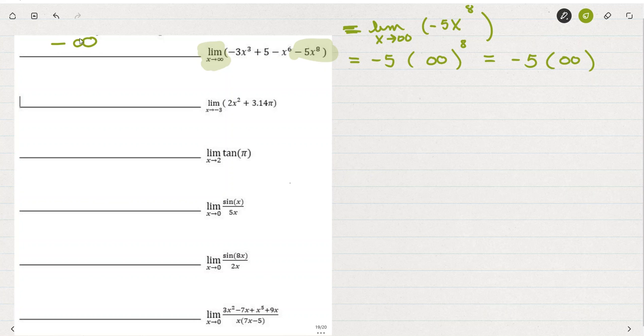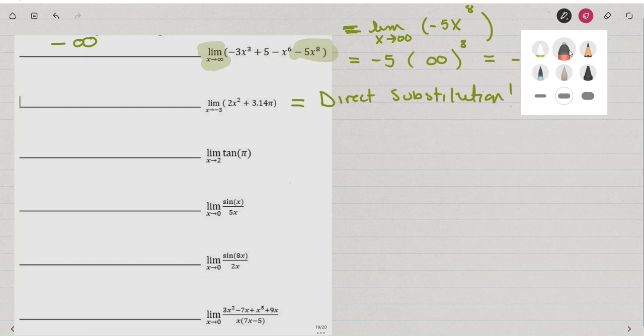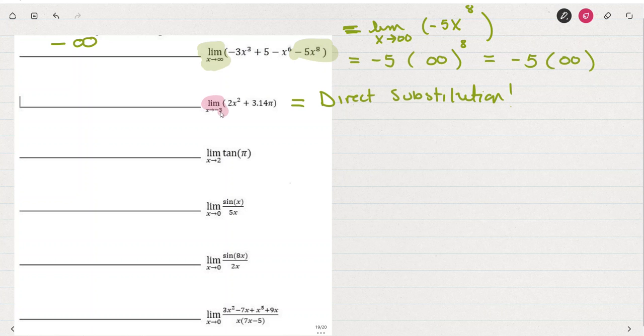The second example, if we simply think about direct substitution, then let me write that out. We're going to use direct substitution. Then what we're going to do is replace the x with the -3. Again, like I mentioned for the last example, we want to note for this limit, what is x approaching? x is approaching -3.